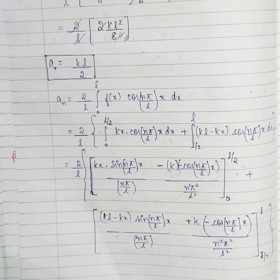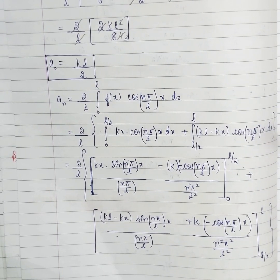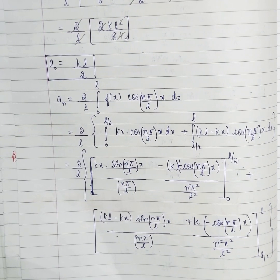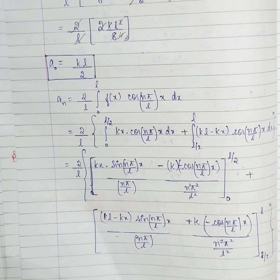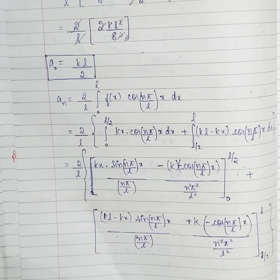In half range it is very simple: either it is 0 to π or 0 to L. No need to check even or odd. If they ask for a cosine series, find A0 and AN — BN will be 0. If they ask for a sine series, find only BN. The formulas are the same as what we used for even or odd functions in full range. They give one half of the interval and ask you to construct the other half — even for cosine, odd for sine. That is it. Thank you.